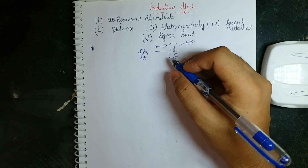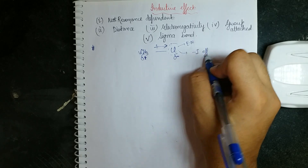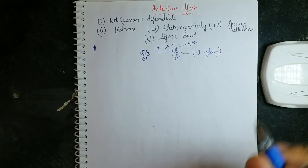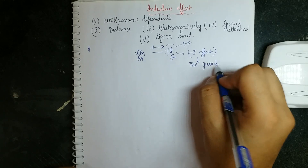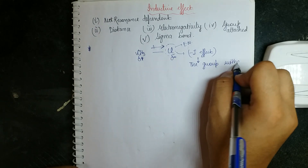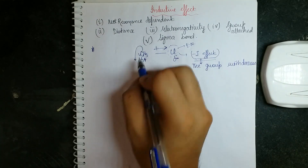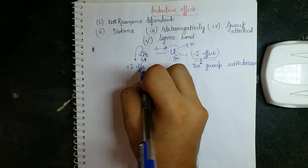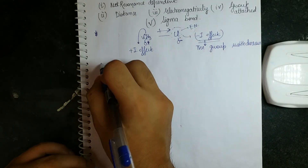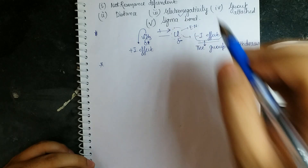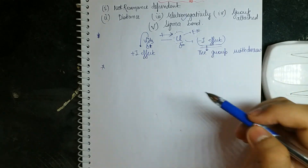Chlorine gets a delta negative charge because it is withdrawing electron density — more electron density is on it. This is the minus I effect: when a group withdraws electrons. The carbon group in this context shows plus I effect because it is releasing electrons.